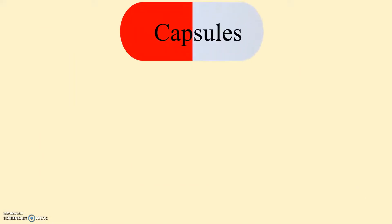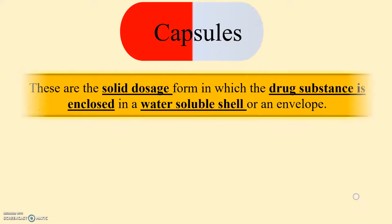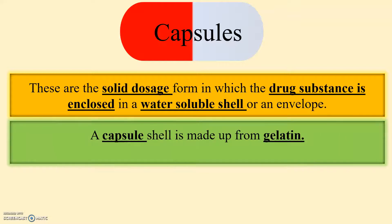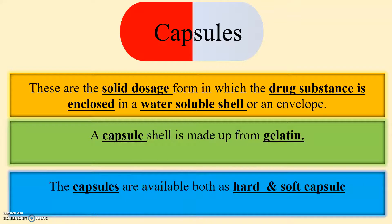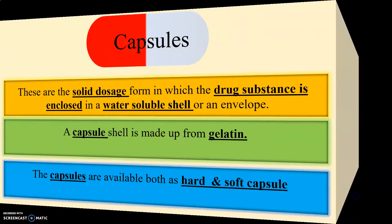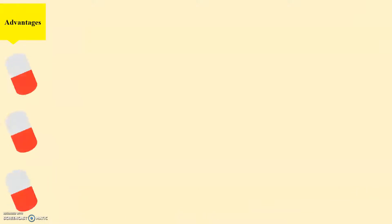Now let us study the capsules. What are capsules? These are the solid dosage forms in which the drug substance is enclosed in a water-soluble shell or an envelope. A capsule shell is made up from gelatin. The capsules are available both as hard and soft capsules.